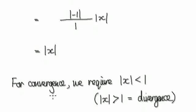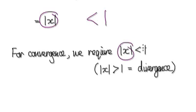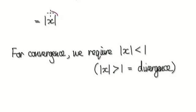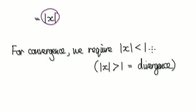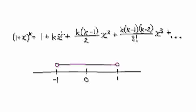Remember, when it comes to the ratio test, if this thing here is less than one, then we know we're going to have convergence. So for convergence, we require the absolute value to be less than one. So after all that, if the absolute value is less than one, then we can be 100% sure it's going to converge. What that means is: for convergence, we've just discovered that the absolute value of x must be strictly less than one.